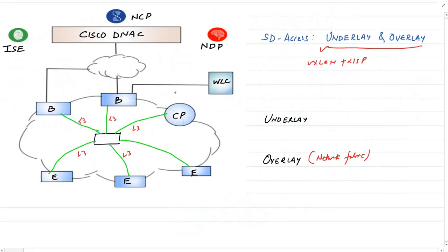In SD-Access architecture, underlay consists of layer 3 links between these devices or you can say between these edge nodes, control plane nodes, and border nodes.